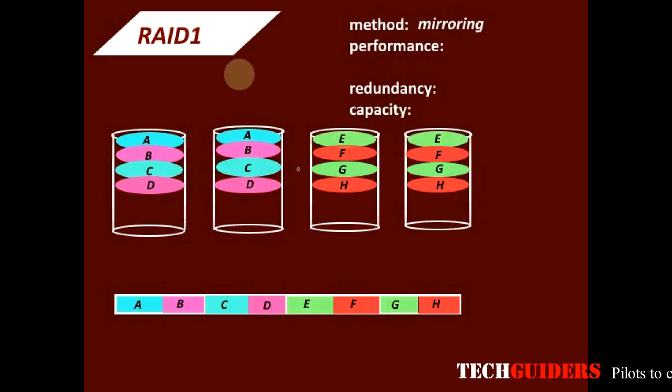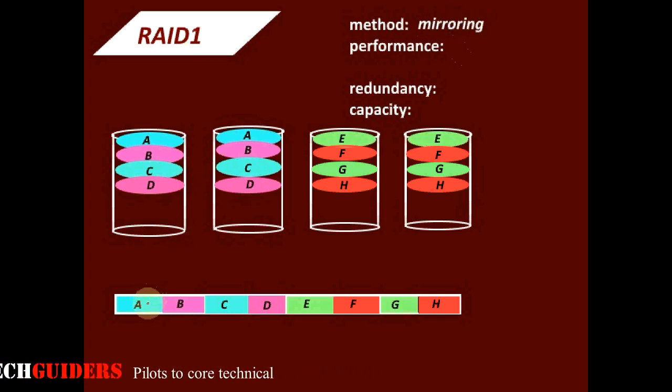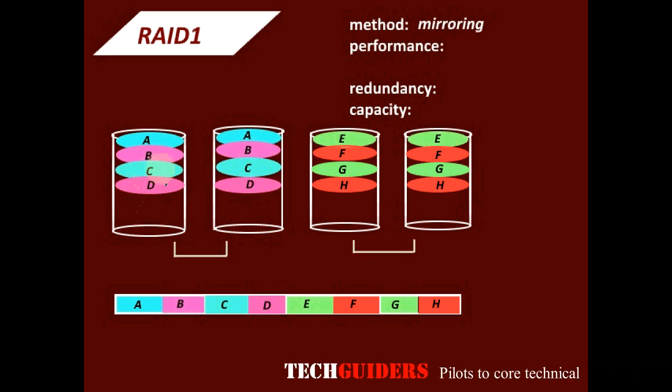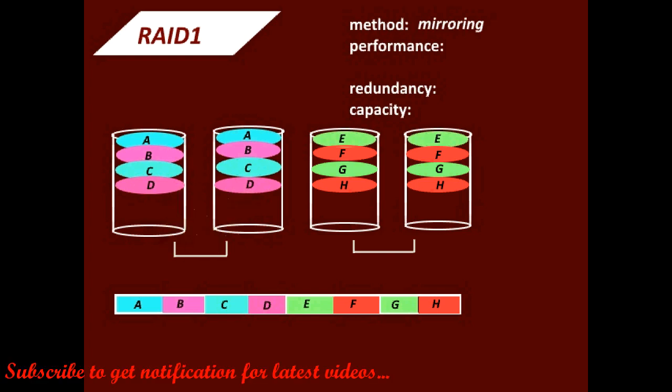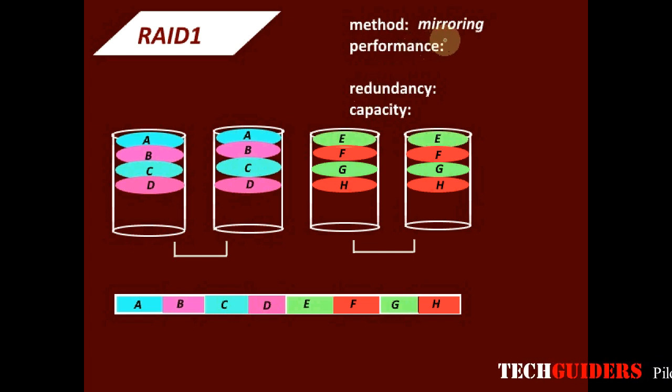RAID 1. RAID 1 makes use of the method of mirroring. In mirroring, every data is written to two drives at the same time. Thus producing a mirrored set of drives. Every disk drive will be having a mirror disk or a shadow disk for itself. As we discussed in the introduction part, mirroring is a method which mainly provides redundancy and thereby reliability.